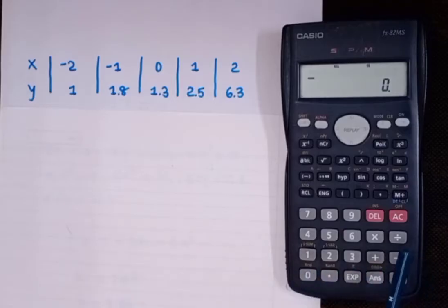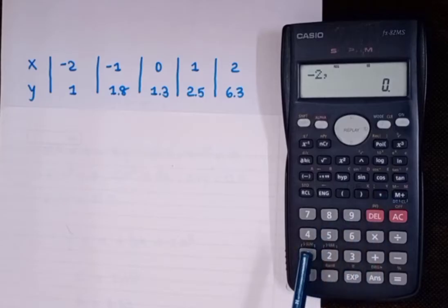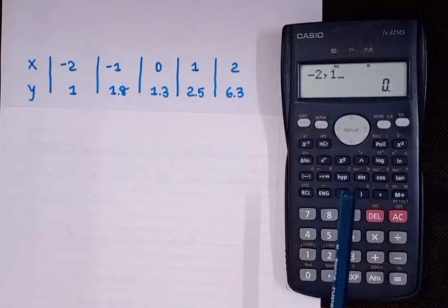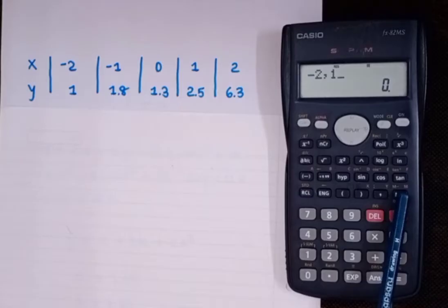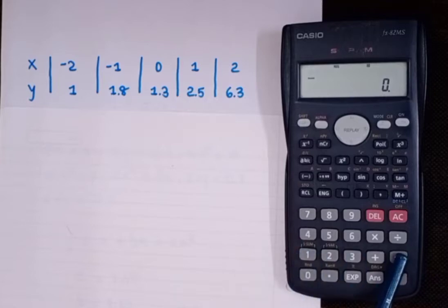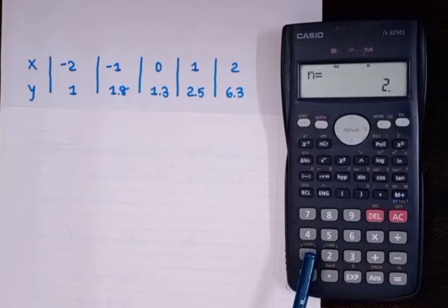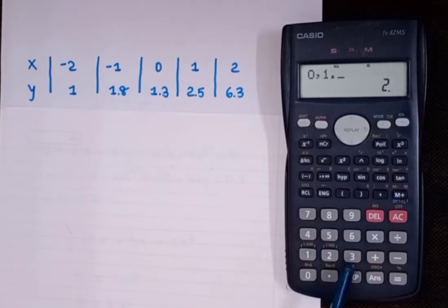Input the values as: x-value comma y-value. The first value is minus 2 comma 1 — press M+, then press AC. Then input the next value: minus 1 comma 1.8 — press M+.